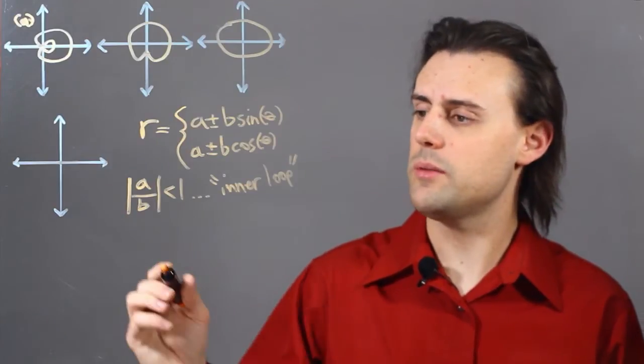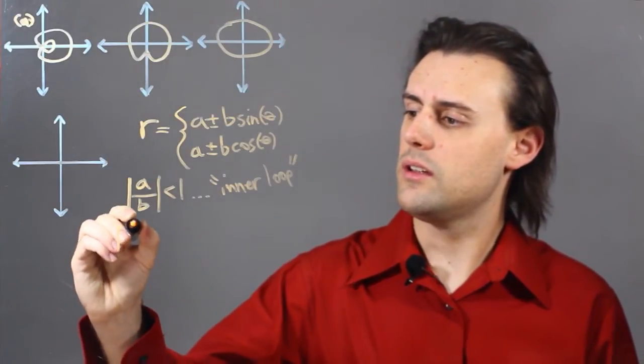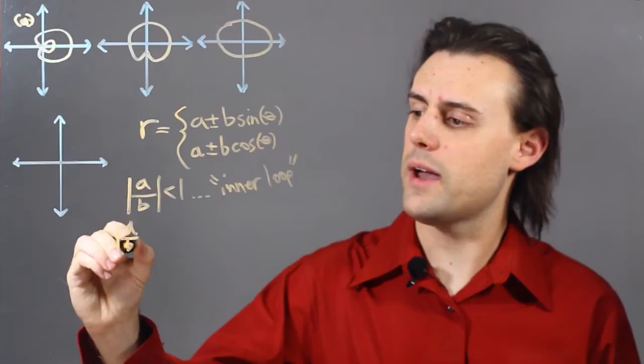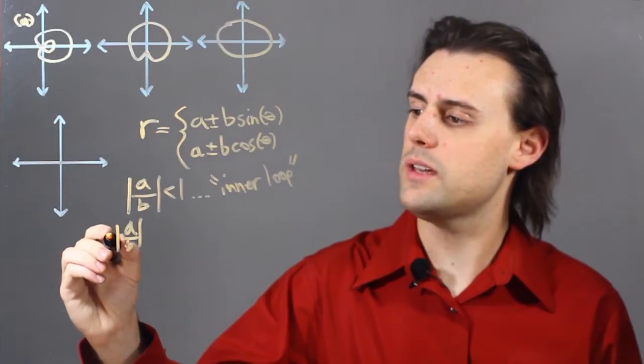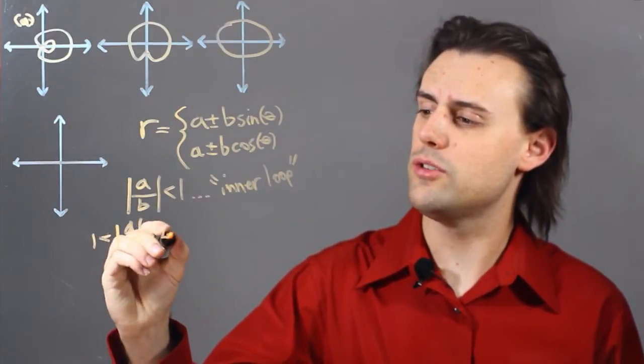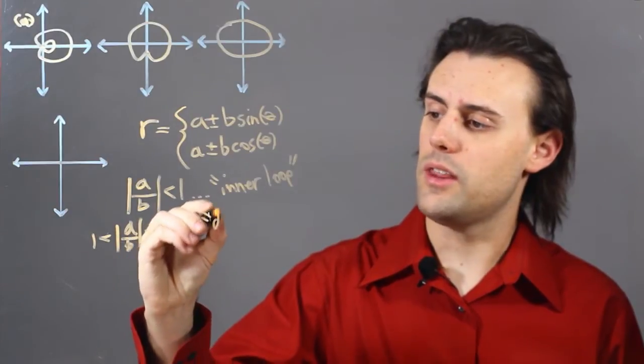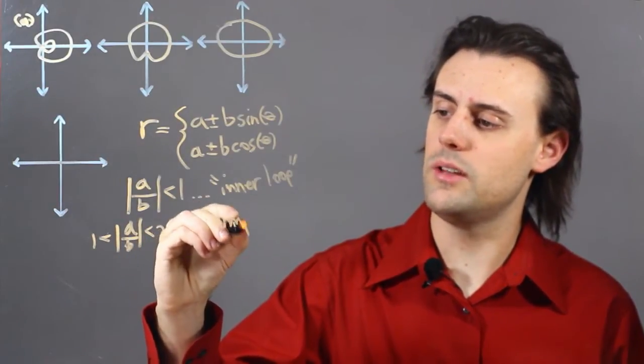The second type of Limasson is the case where the magnitude of the ratio a over b is greater than 1 but less than 2. And this type of Limasson has a dimple in it.